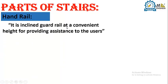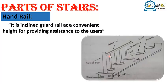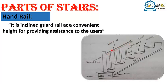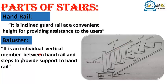What is a handrail? A handrail is an inclined guard rail at a convenient height for providing assistance to users. As you can see here, this is the handrail provided at a convenient height. What are balusters? A baluster is an individual vertical member between the handrail and steps to provide support to the handrail. It is provided at each step — one, two, or more than two — to provide support to the handrail.